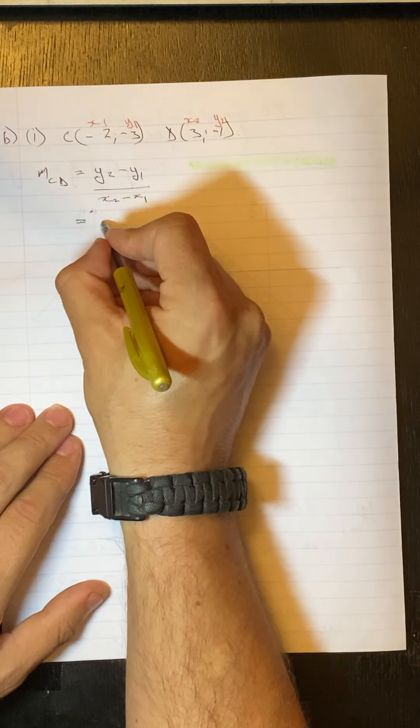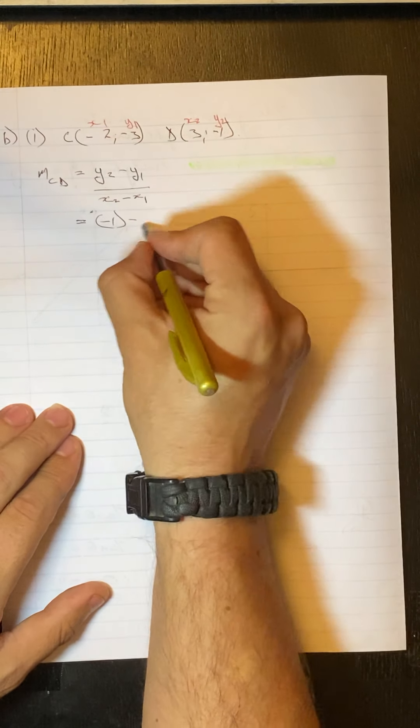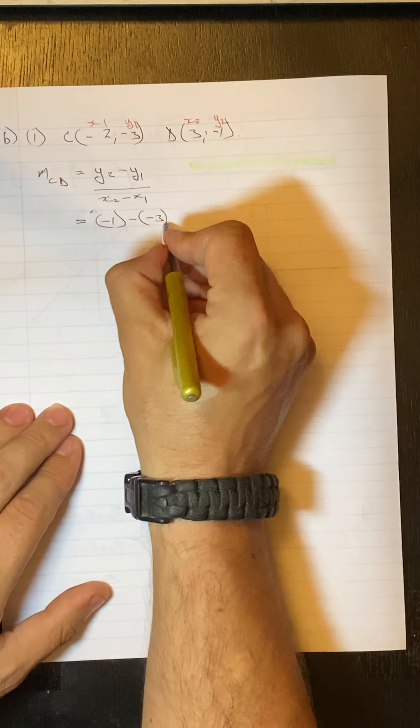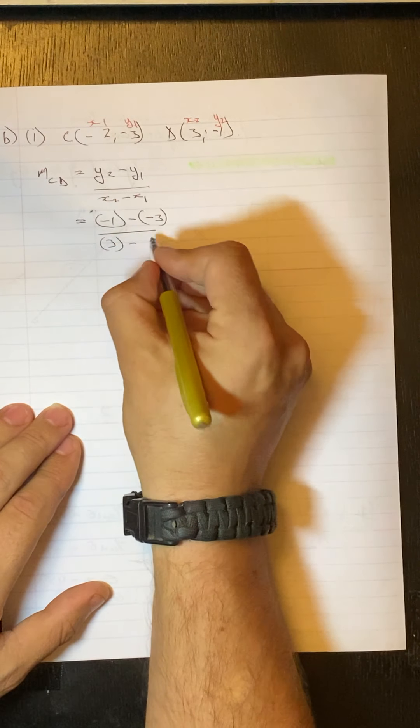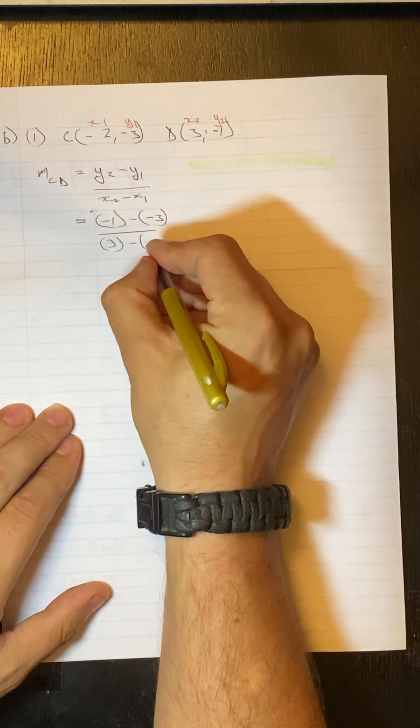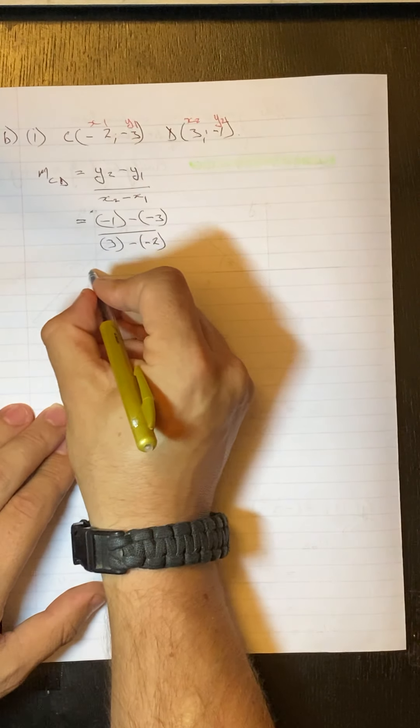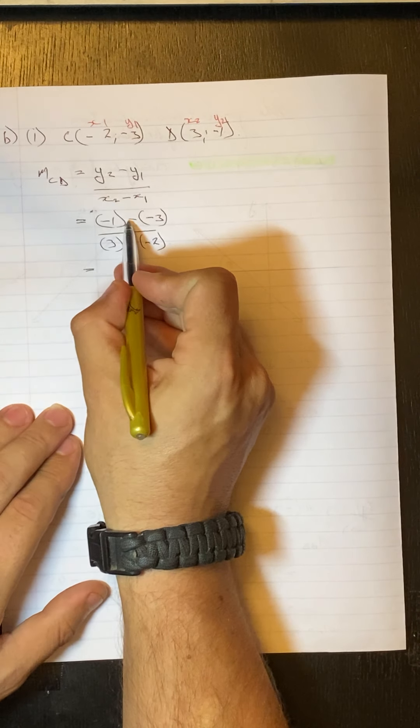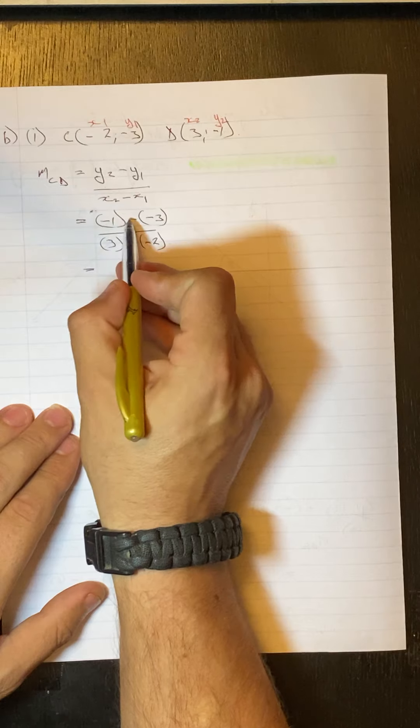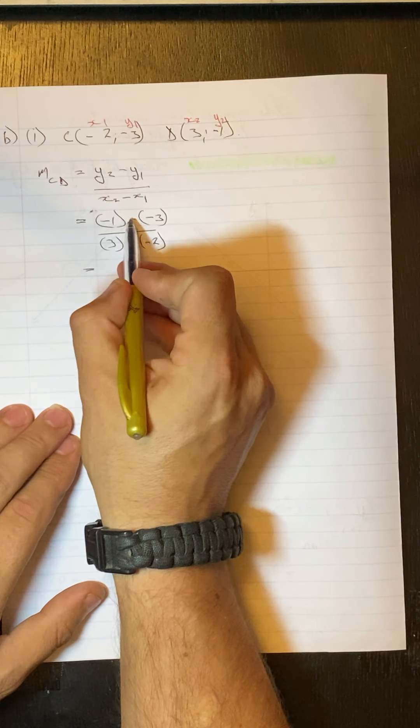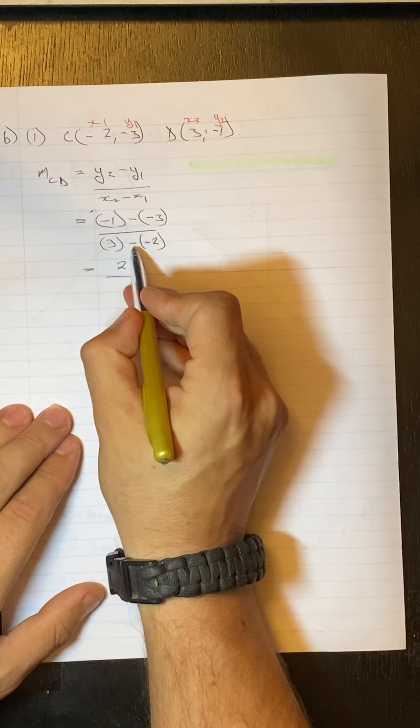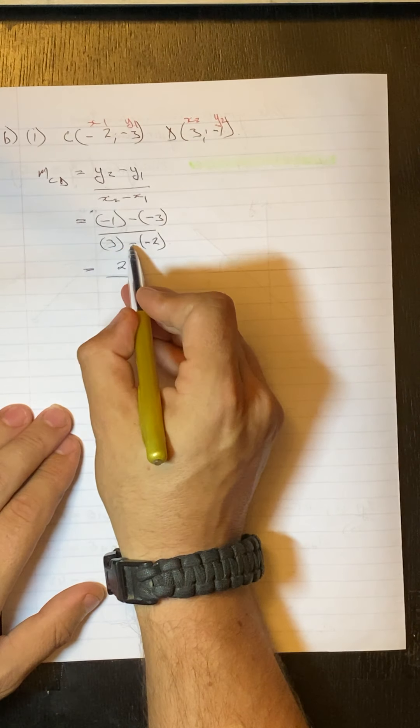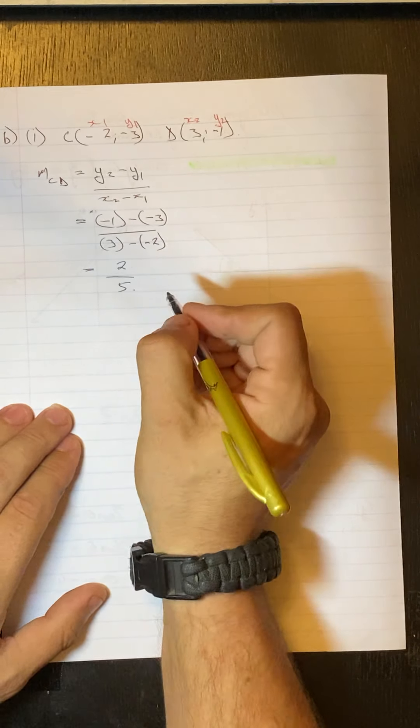So, our y2 value is minus 1, minus our y1 value, minus 3, over our x2 value is 3, minus our x1 value is minus 2. Minus 1, minus minus 3 becomes minus 1 plus 3, which gives us 2. 3 minus minus 2 becomes 3 plus 2, which gives us 5.